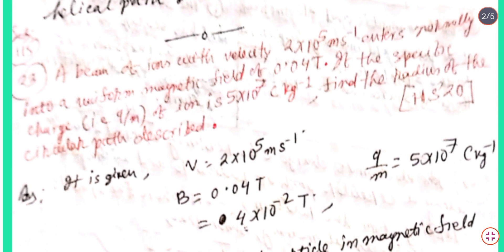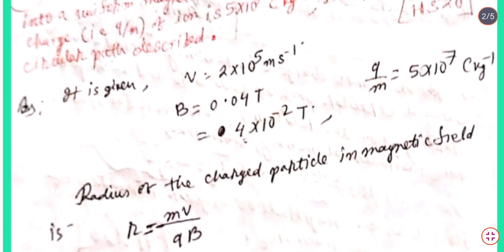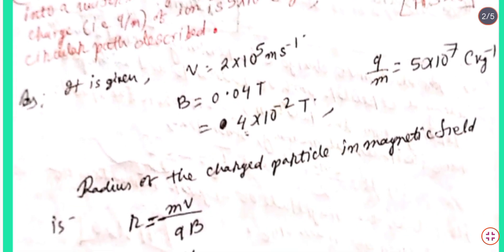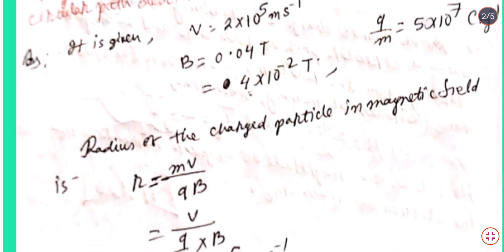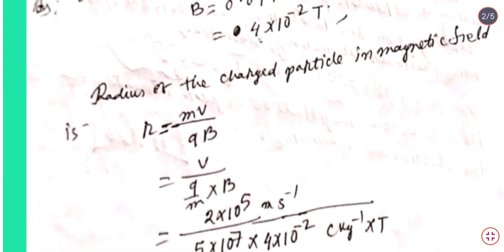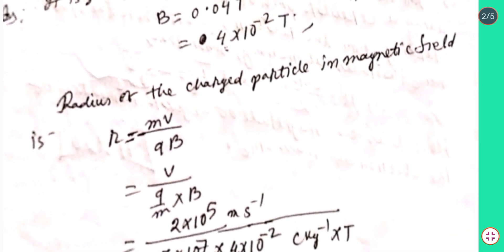The radius of the circular path of a charged particle in a magnetic field is r = mv/qB. Using the specific charge q/m, this becomes r = v divided by (q/m) times B, which simplifies using the given values.